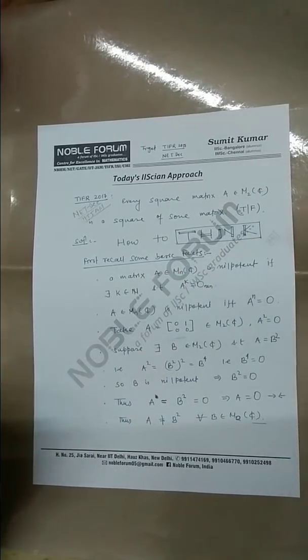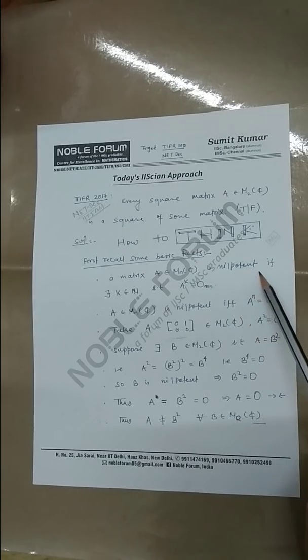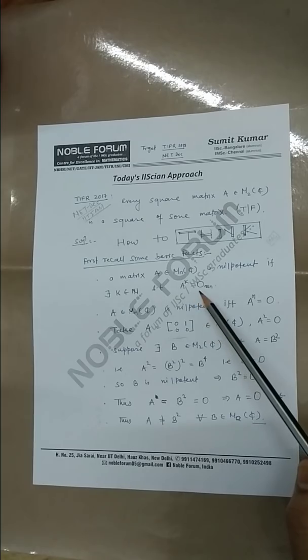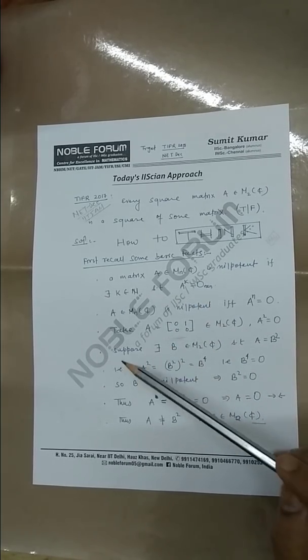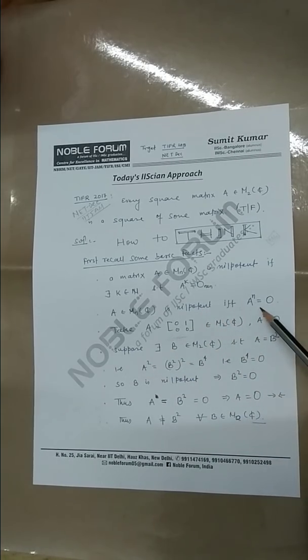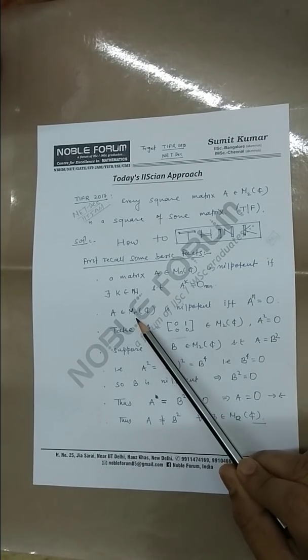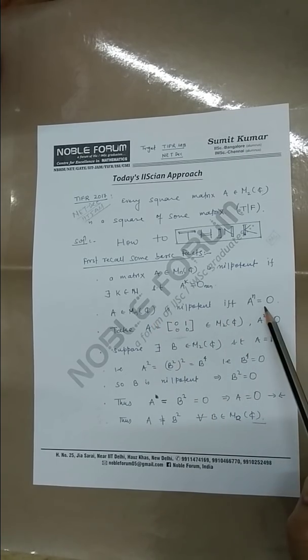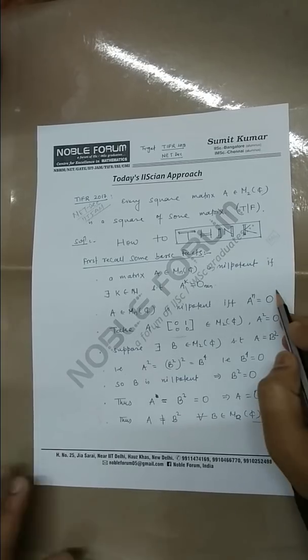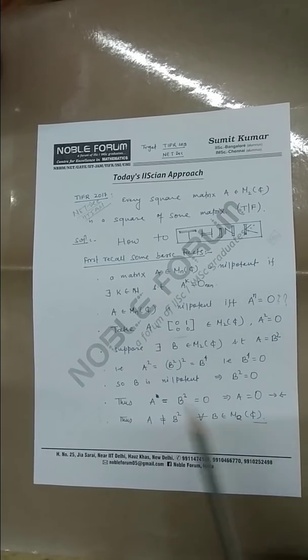Recall some basic facts. What do you mean by nilpotent matrix? A matrix A is said to be nilpotent if there exists k belongs to N such that A to the power k equals zero. A matrix is nilpotent if and only if A to the power n equals zero, where n is the size of your matrix.